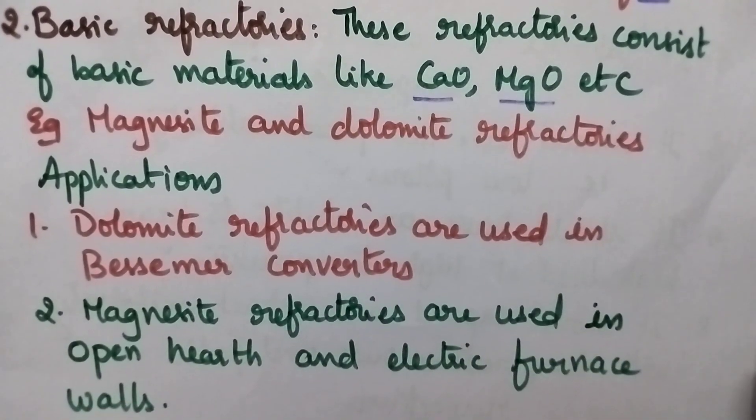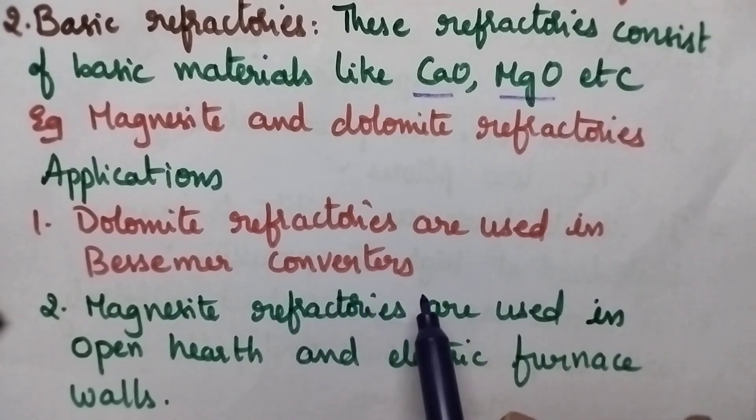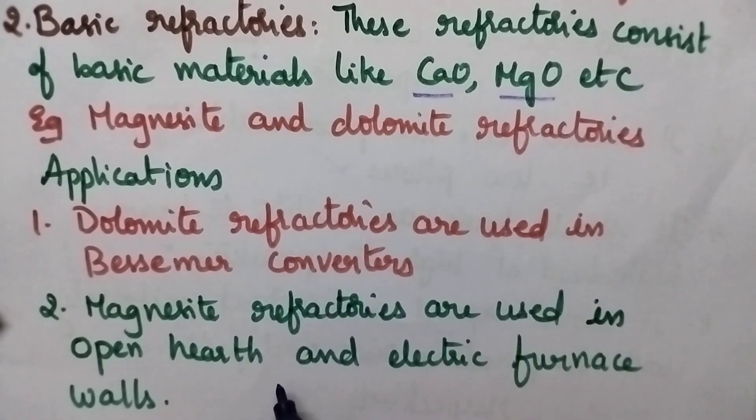Coming to the applications, dolomite refractories are used in Bessemer converters, whereas magnesite refractories are used in open hearth and electric furnaces.